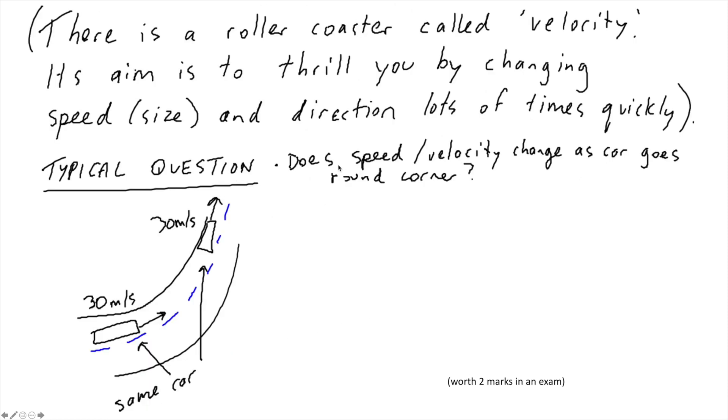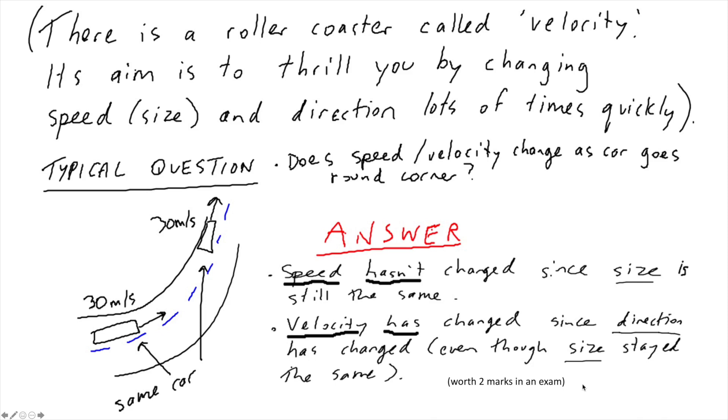So here's a question. Does speed or velocity change as this car goes around the corner? Before the corner, it was 30 meters a second. After the corner, it's 30 meters a second. So basically, it's the same speed. The speed did not change as it goes around the corner. It's the same size there. However, velocity depends on the size and the direction. And since the direction changes, therefore, the velocity changes. And you'll get two marks for seeing that in an exam.